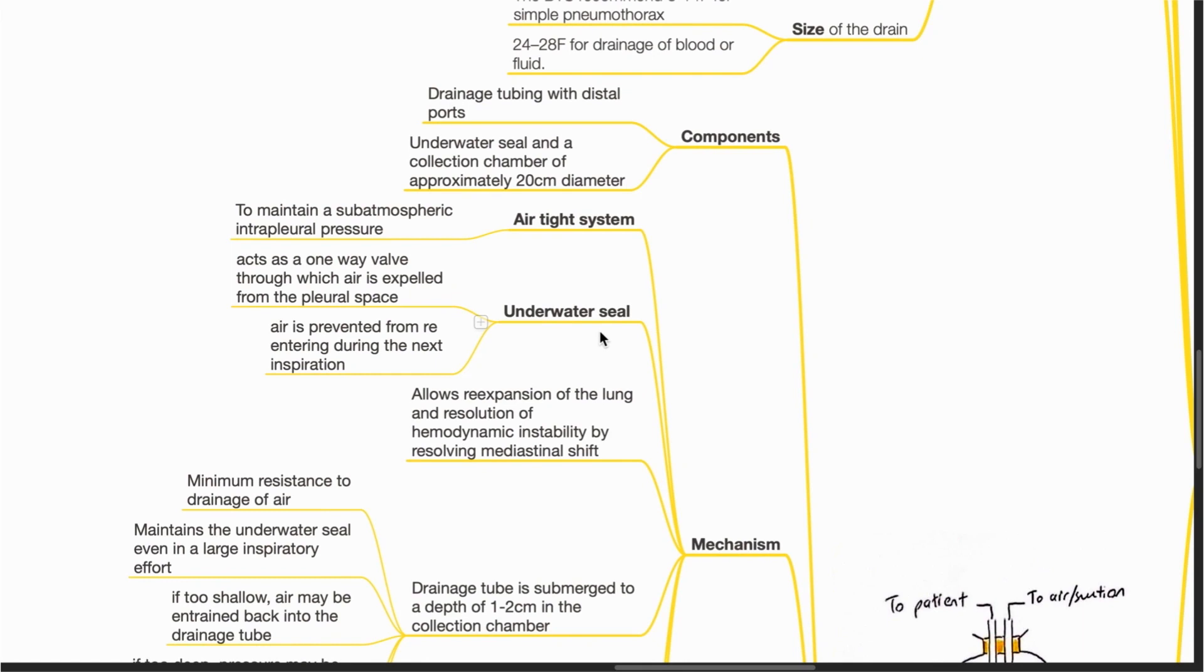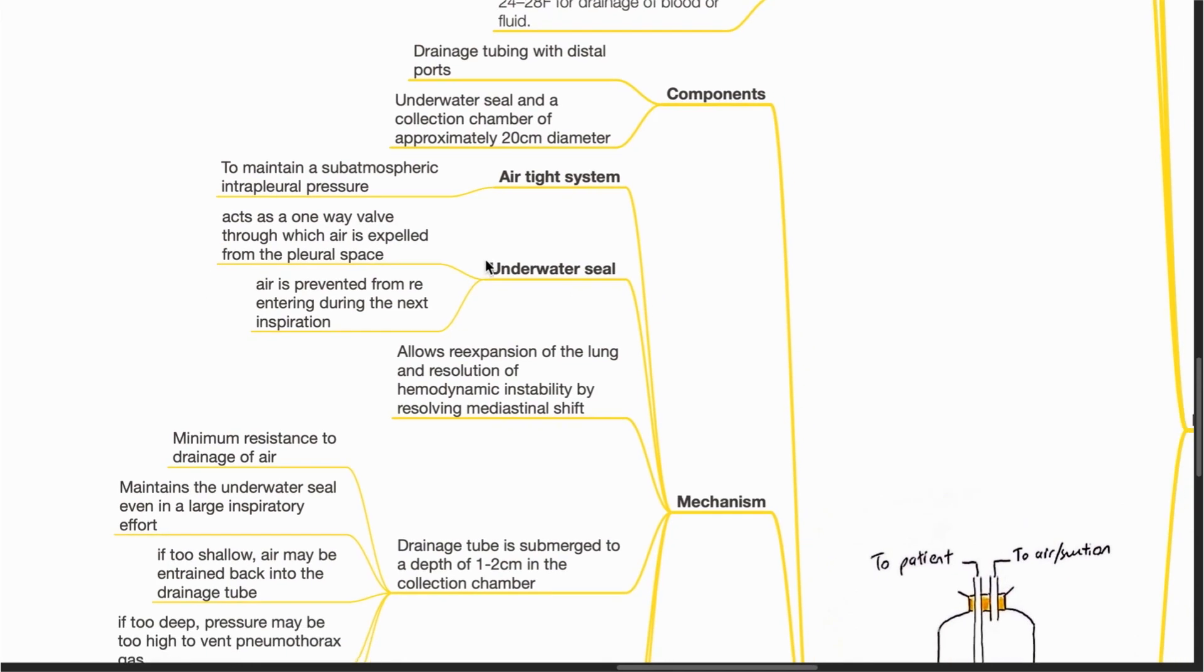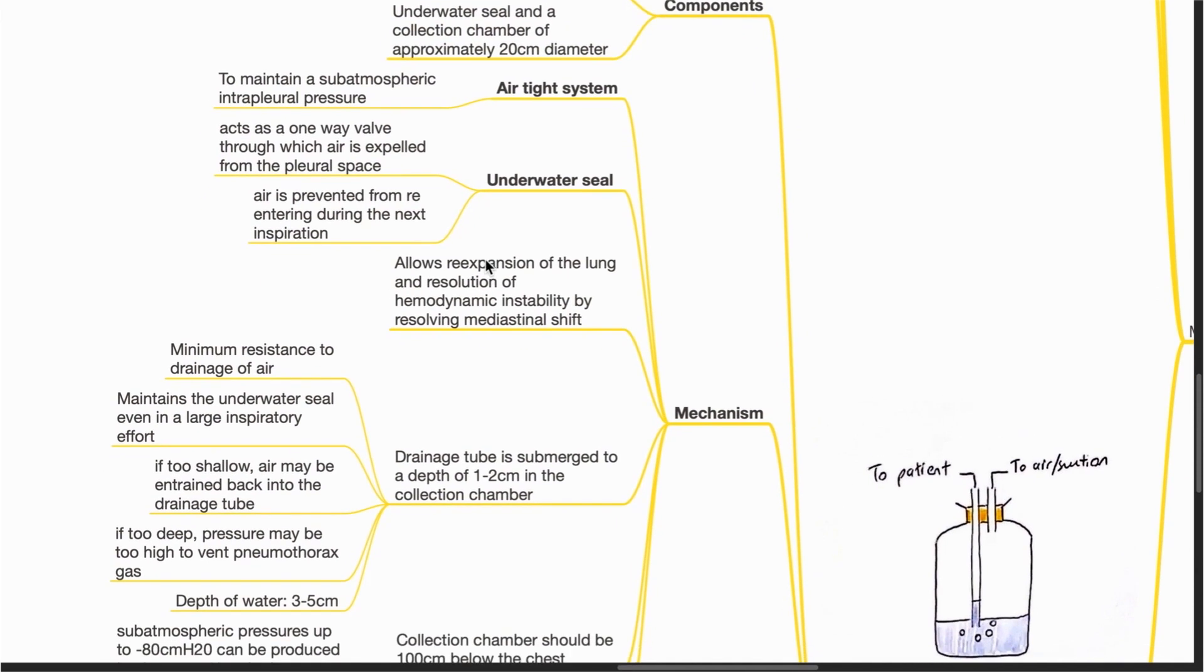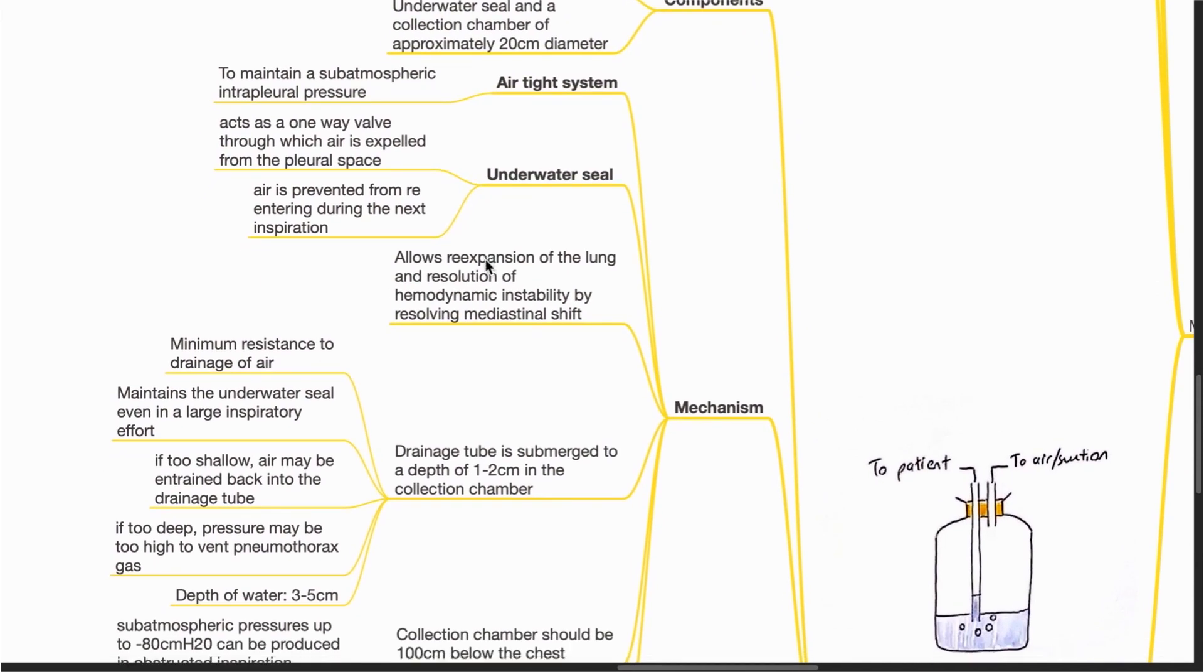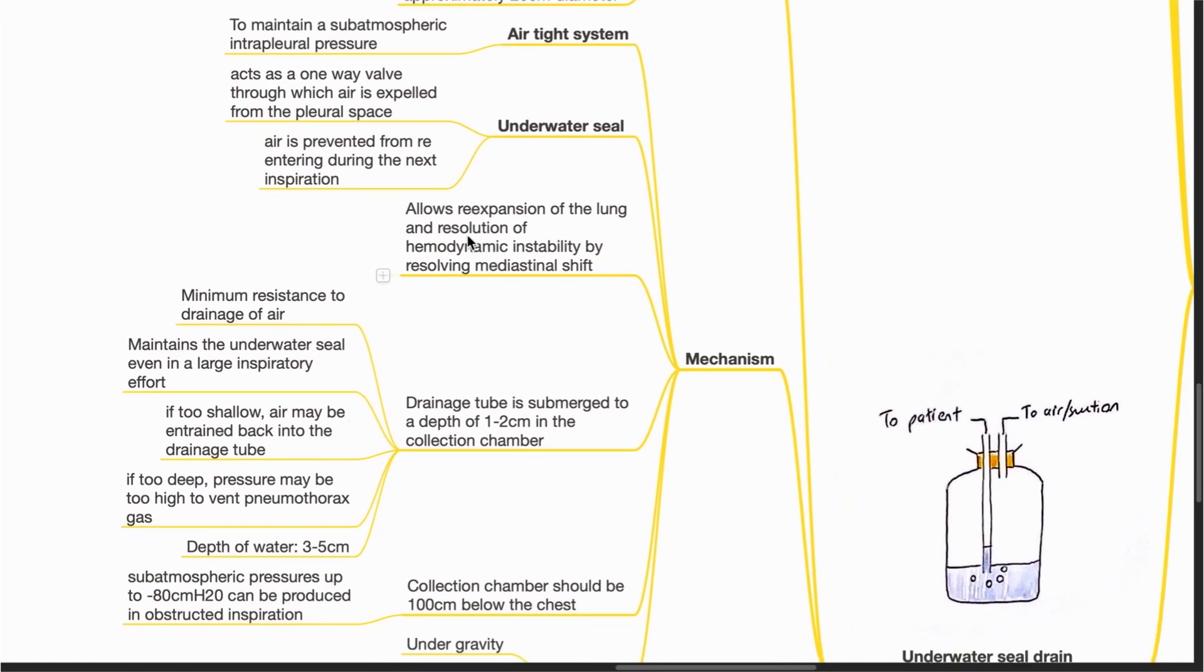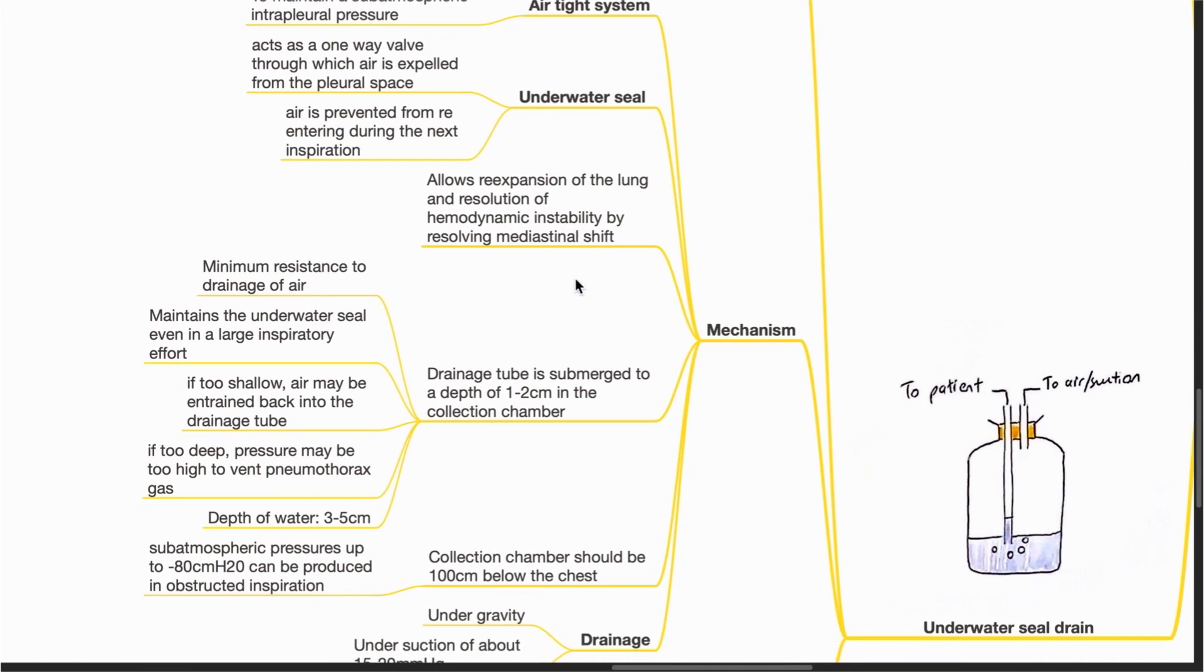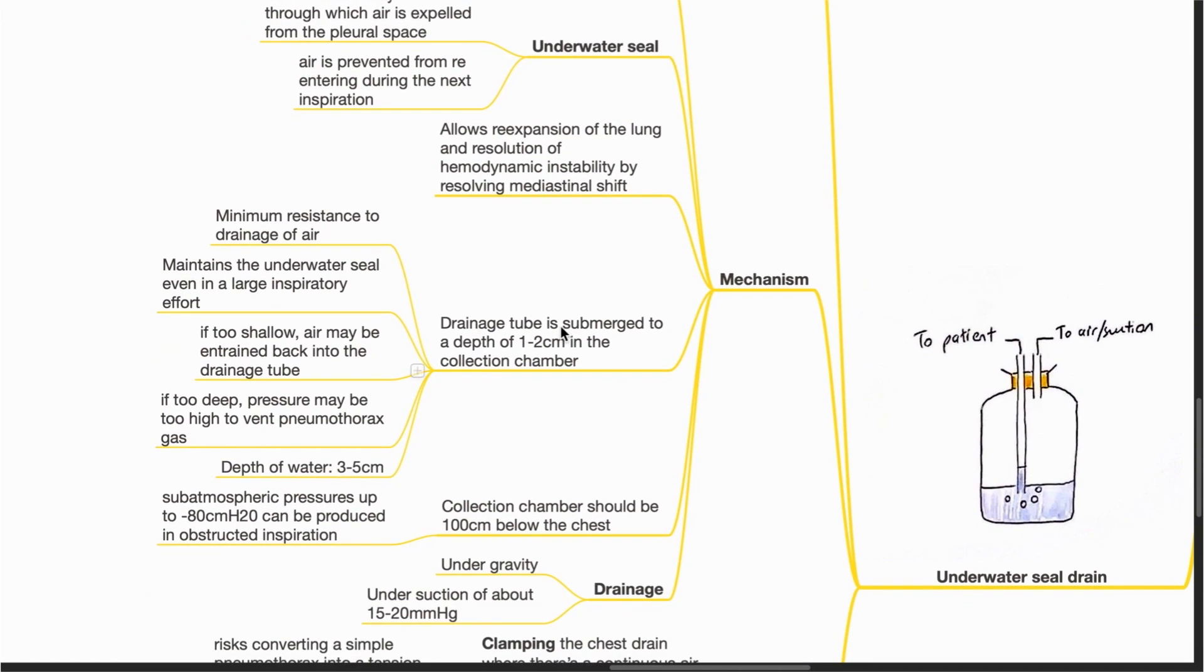The underwater seal acts as a one-way valve through which air is expelled from the pleural space and air is prevented from re-entering during the next inspiration. This allows re-expansion of the lung and resolution of hemodynamic instability by resolving mediastinal shift.